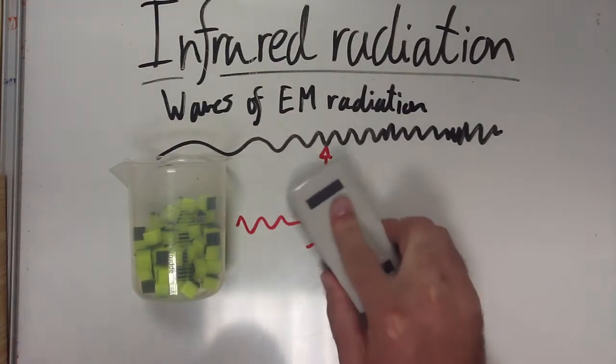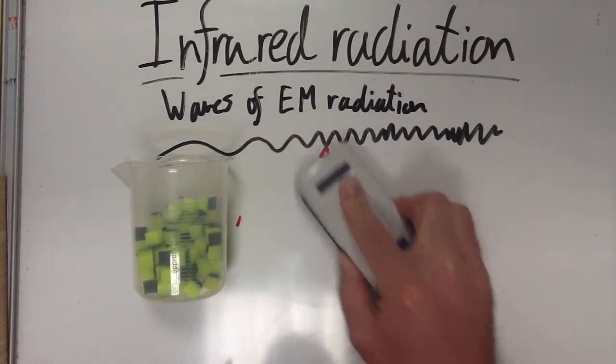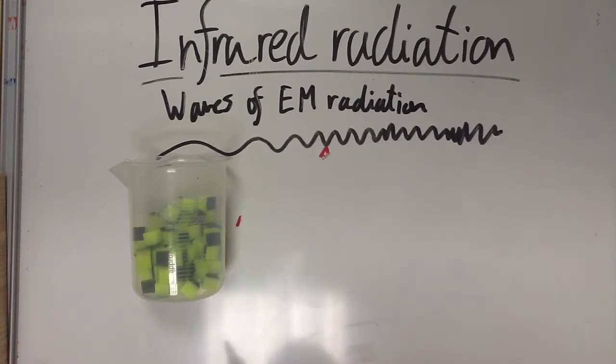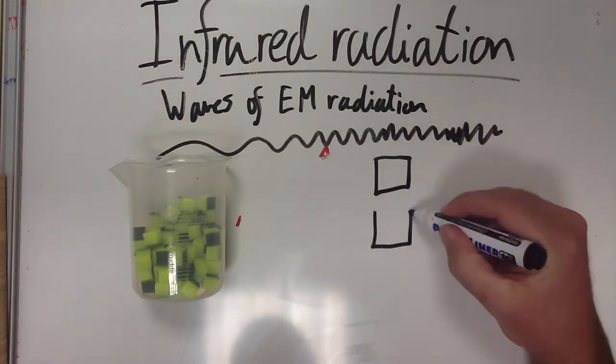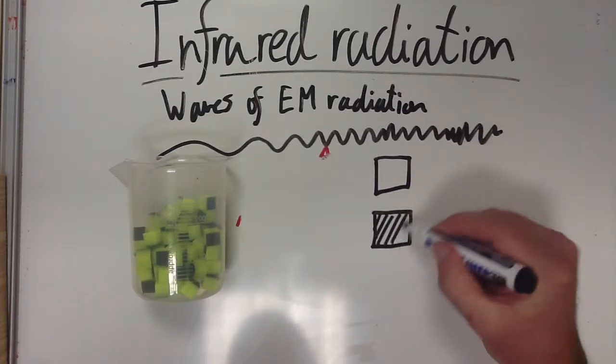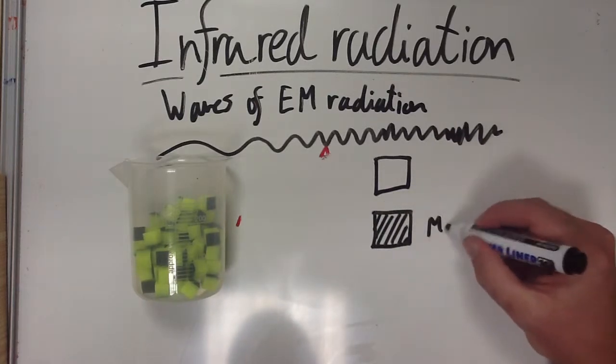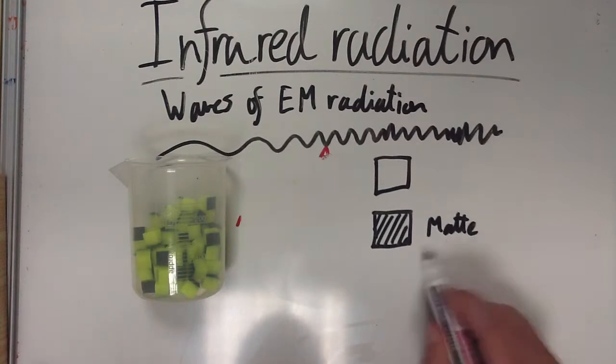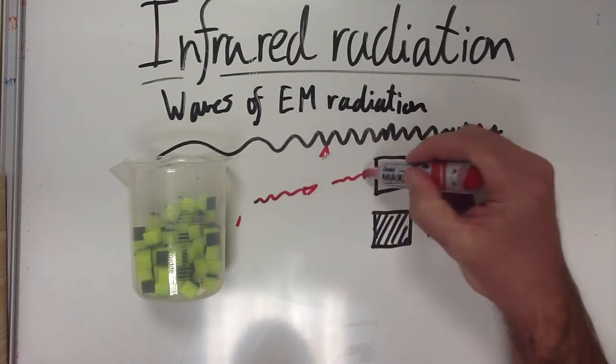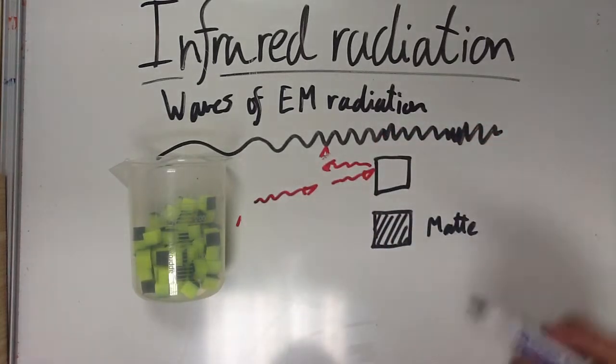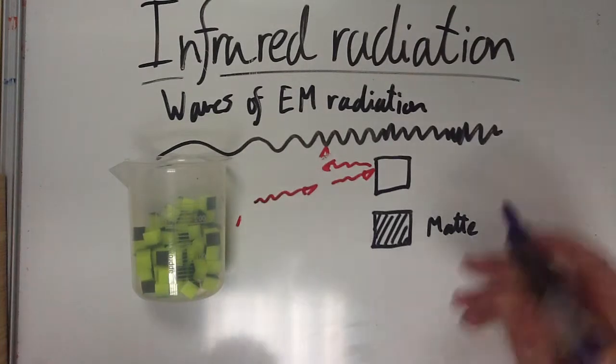Infrared radiation can be absorbed and emitted depending on the nature of the surface. If we have a white surface and a dark surface, so a white shiny surface and a dark black matte surface, matte just means rough, this surface here, the white shiny one, will reflect some of the infrared radiation.